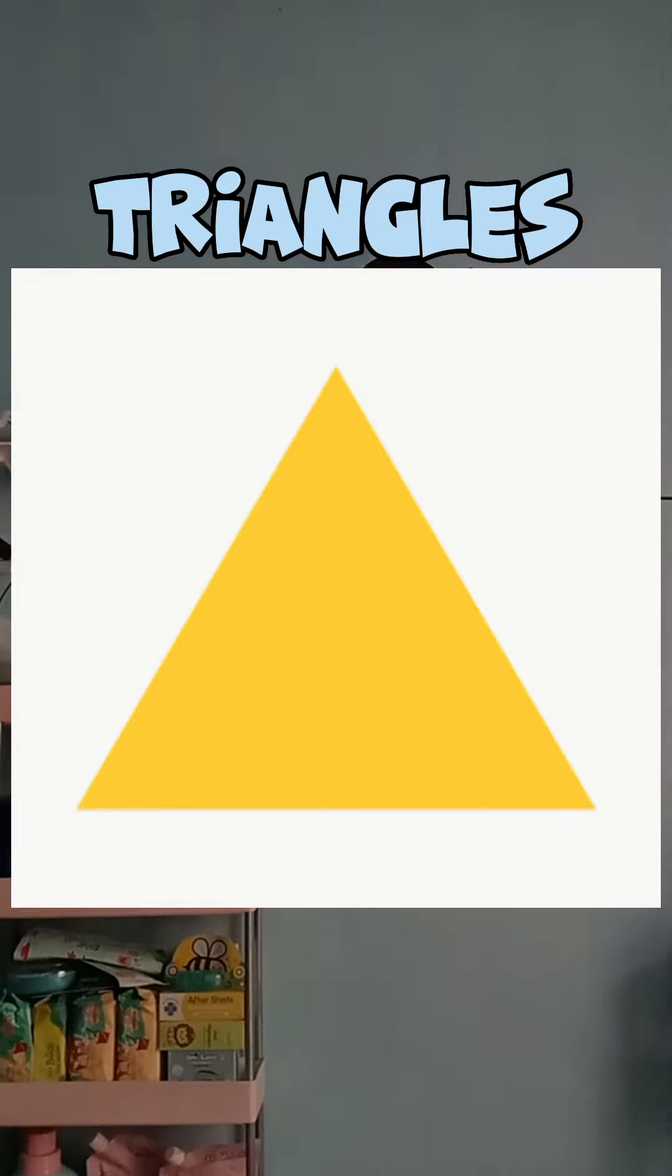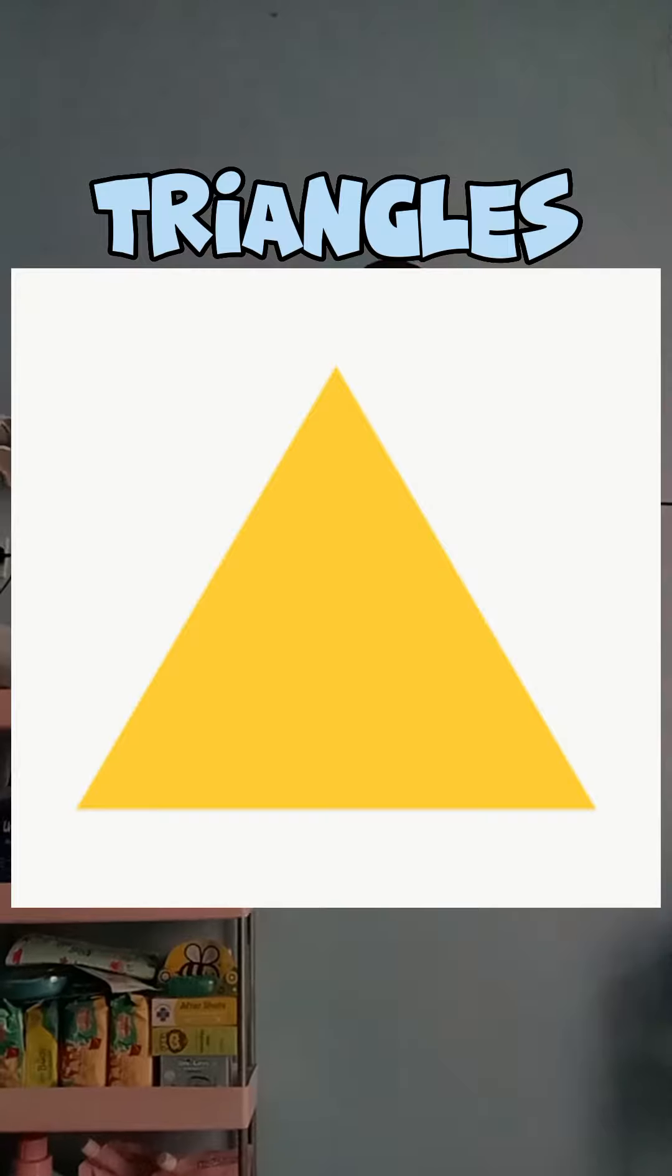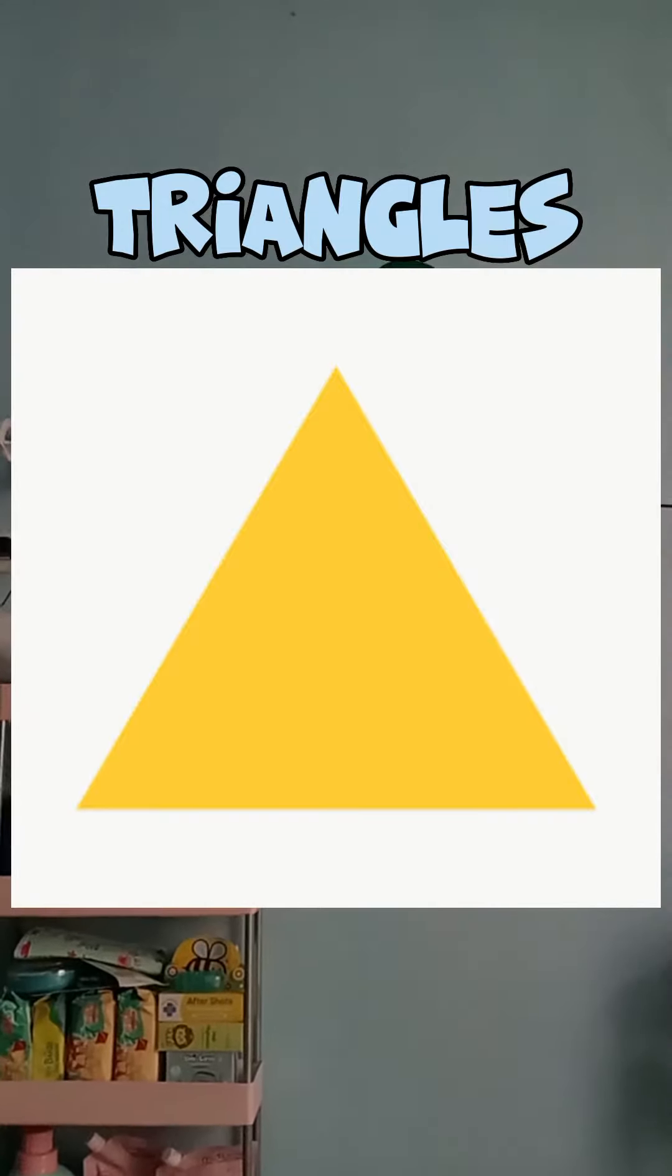A triangle is a polygon with three edges and three vertices. It is one of the basic shapes in geometry. Triangles can be classified based on their angles into three types.